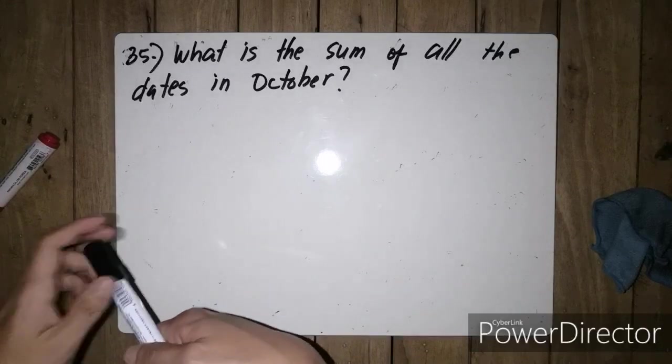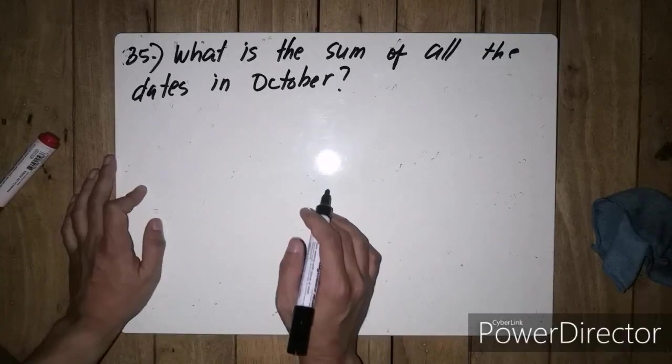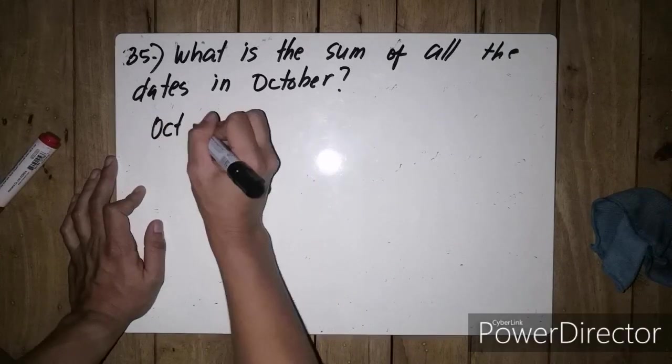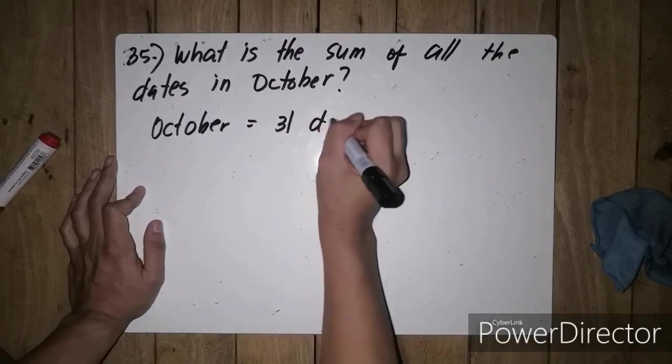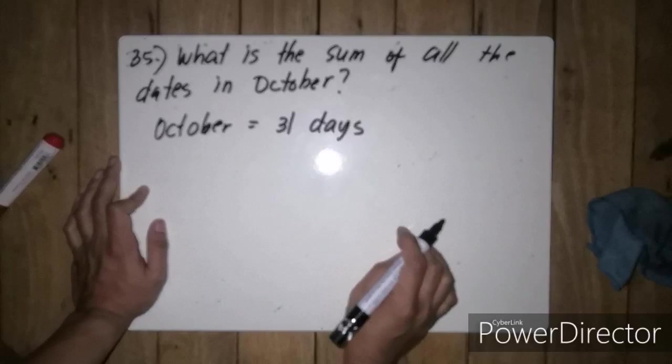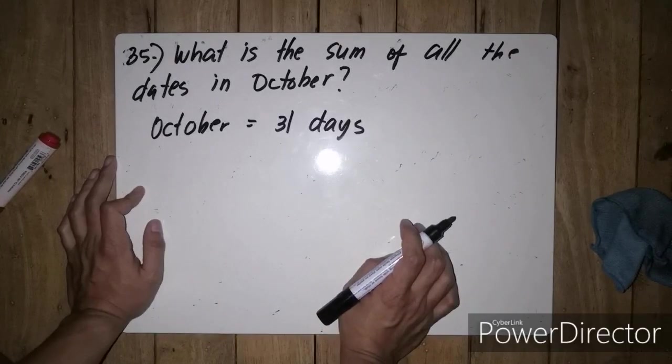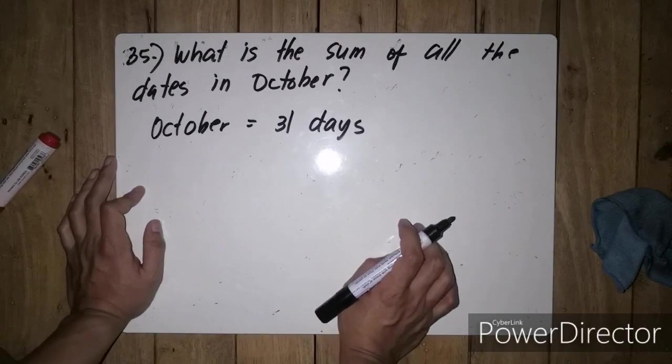The first thing that we need to do is to identify ilang araw ba meron ng October. So October has 31 days. So the next thing is to add all the days of October.